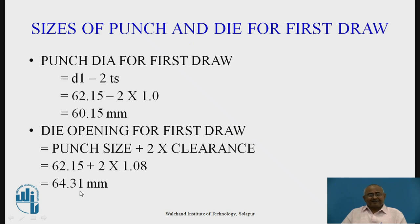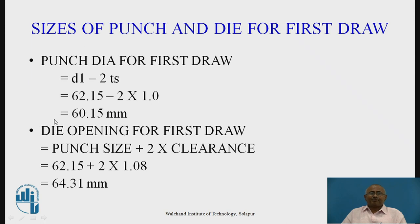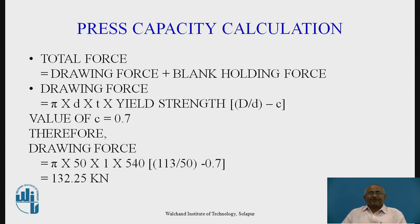Please remember that punch size is smaller and die size has to be larger than our cup size. Sizes of punch and die for the first draw: punch diameter = D1 − 2 × sheet thickness = 62.15 − 2 × 1 = 60.15 mm. Die opening for the first draw = punch size + 2 × clearance = 60.15 + 2 × 1.08 = 62.31 mm.